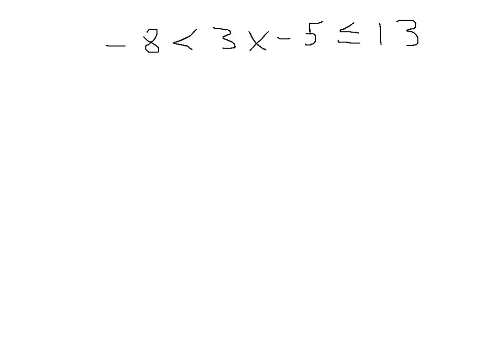So the way we solve this is simply to add 5 all along, just like that. And what we get is minus 3 is less than 3x is less than or equal to 18.